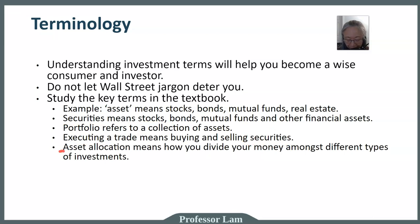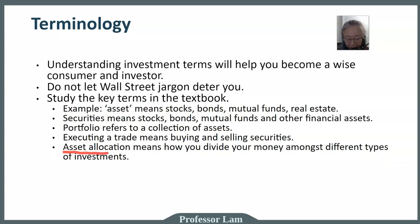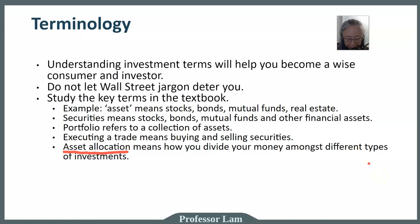Another very important term in investment is asset allocation. Asset allocation simply means how you divide your money amongst different types of investments. For example, if you put 60% of your money in stocks and 40% in bonds, that is one form of asset allocation. If you put 50% in stocks and 50% in mutual funds, that is another form of asset allocation.